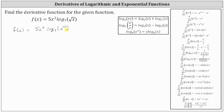From here we can apply the power property of logarithms, which states log base a of x to the power of y equals y times log base a of x. This means we can move the exponent of 1 half to the position of the coefficient — in this case, move it all the way to the front and multiply it by five. This gives us f of x equals five halves x squared times log base seven of x.